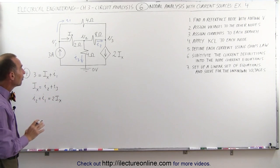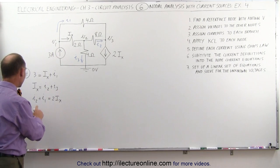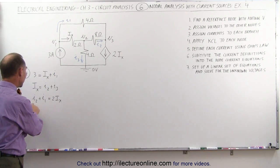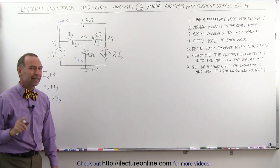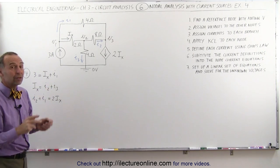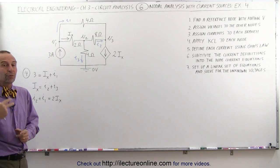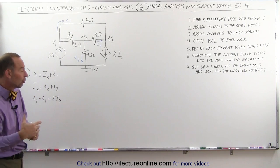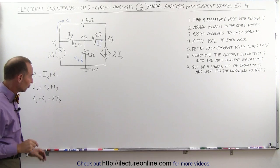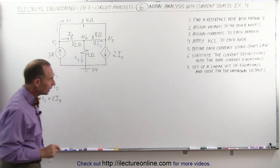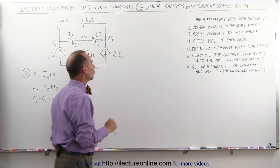Now we have three equations but four unknown currents: I sub 1, I sub 2, I sub x, and I sub 3. Using nodal analysis, we can rewrite these in terms of three unknown voltages instead of four unknown currents, which makes it a little easier to solve. The next step is to define each of the currents using Ohm's law.